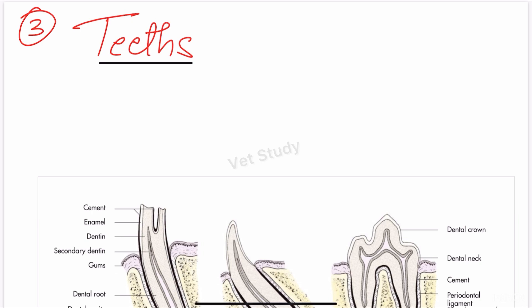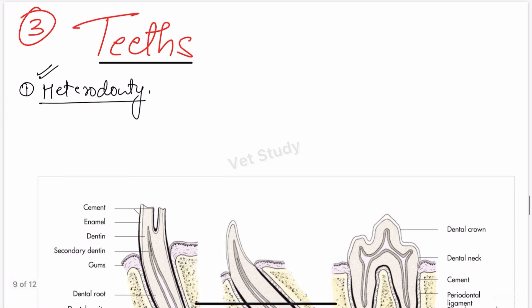Before starting we have to go through some general terminology. The first term is heterodonti. In different species the development of teeth is different — they develop in different manner in terms of shape and size — because the purpose is that teeth perform different specialized jobs in different species. So the difference in development of teeth in different species in terms of shape and size is known as heterodonti.